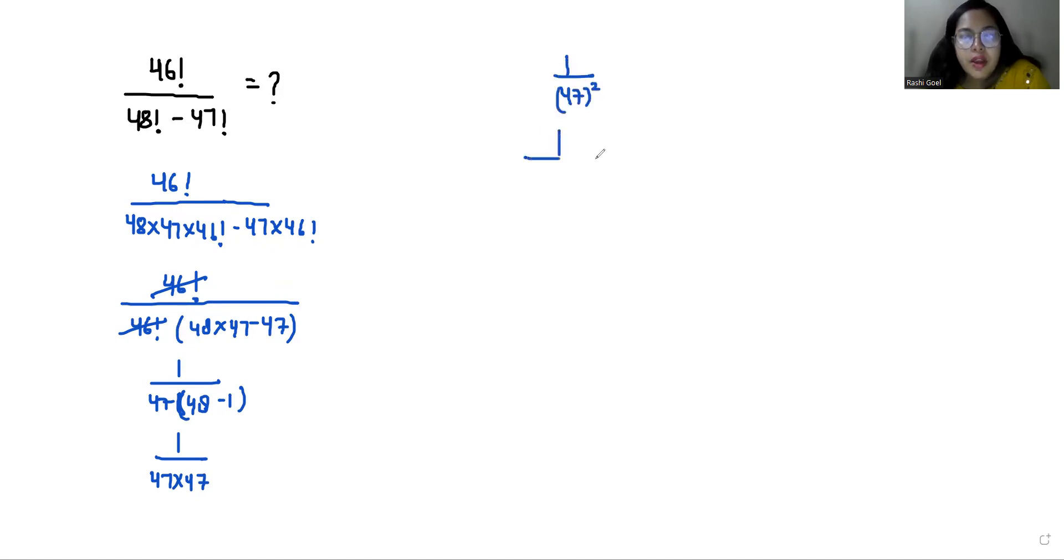So 1 by 47 square we can write it as 50 minus 3 whole square. So I can use a very famous identity A minus B whole square: A square plus B square minus 2AB.